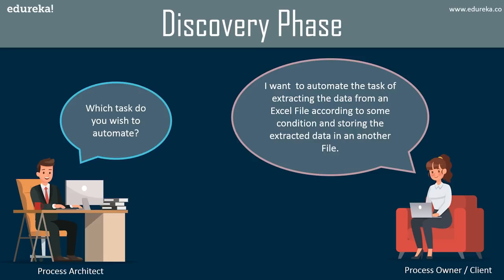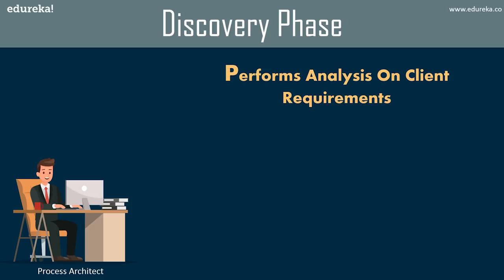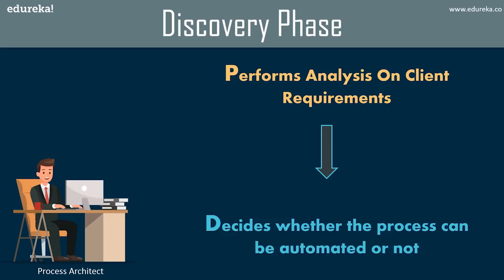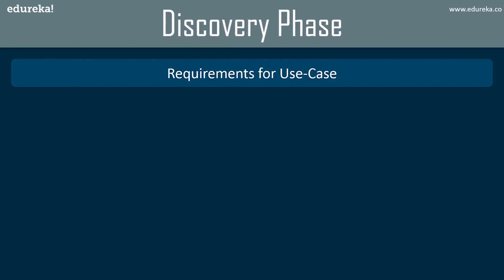For our scenario, we're going to extract data from an Excel file according to some condition and store the extracted data into another Excel file. In the discovery phase, the first step is to analyze the client requirements — the process architect sits with the team and analyzes them. Once analyzed, the process architect decides whether the process can be automated or not. Not every process can be automated due to dependency issues.